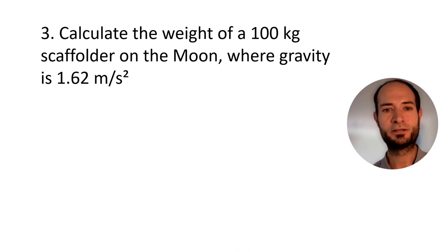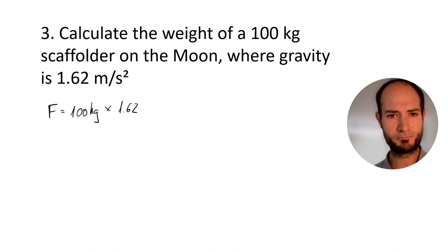Last exercise. Calculate the weight of a 100 kilogram scaffolder on the Moon where gravity is 1.62 meters per second squared. Here we can only use the equation. The mass is 100 kilograms times the acceleration of gravity 1.62, which equals 162 newtons. Dividing by 1000 gives us 0.16 kilonewtons.